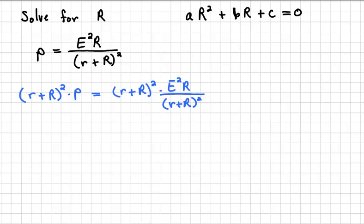Now the whole reason we wanted to do that is because this r plus R squared would cancel with this r plus R squared on the right side. So that leaves us with r plus capital R quantity squared P equals E squared capital R.